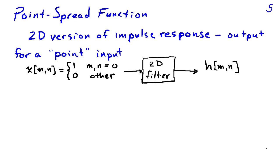When filtering images, something called the point spread function naturally arises — this is the two-dimensional version of the impulse response. The impulse response of a one-dimensional filter is the response to an impulse input. In 2D, the point spread function is the output of the 2D filter in response to a point input — an impulse with respect to both dimensions m and n. We define the input to be one when m and n are both zero and zero otherwise, put that through our filter, and the output h of m comma n is the point spread function.